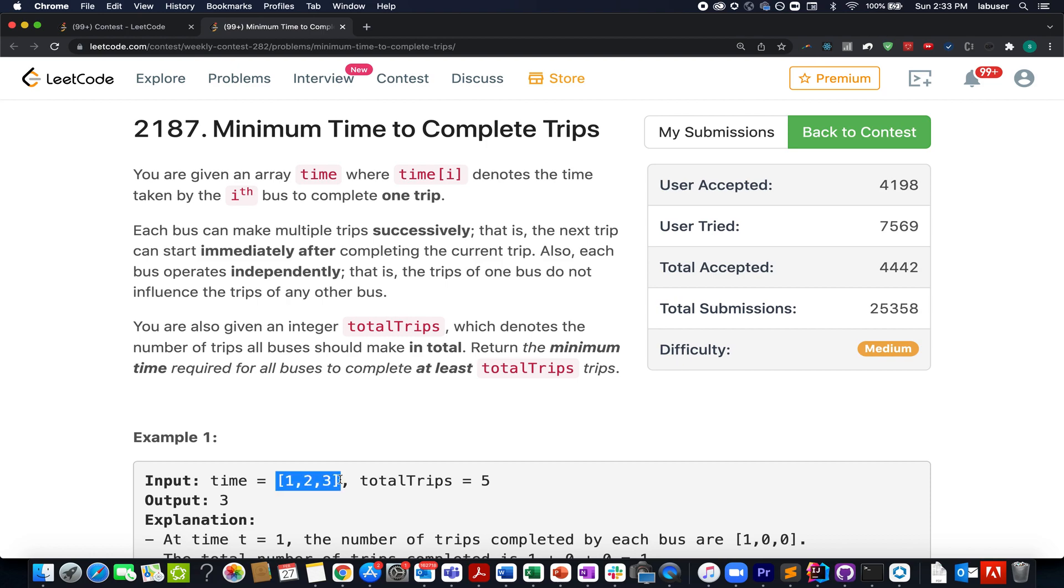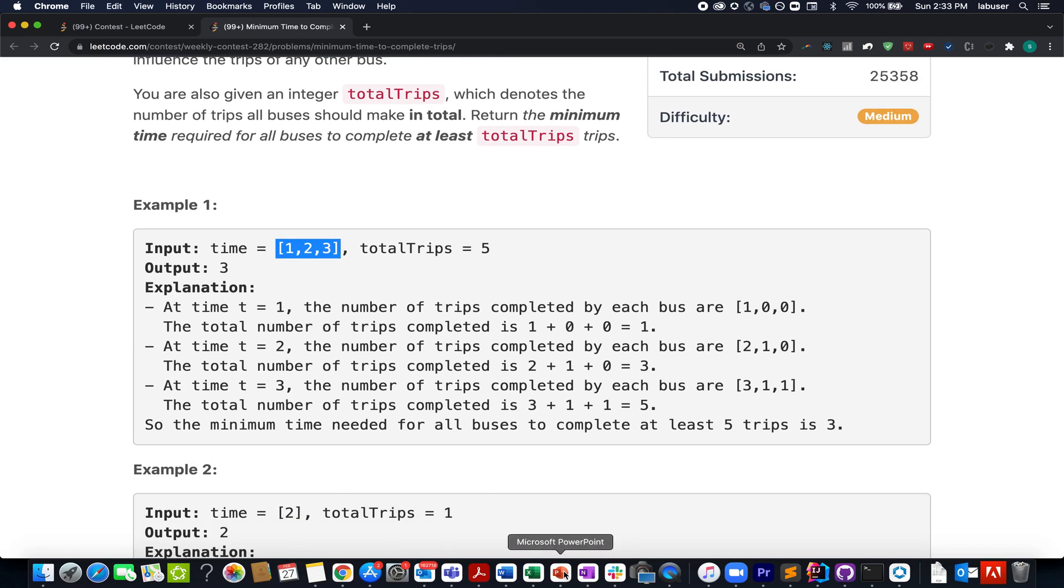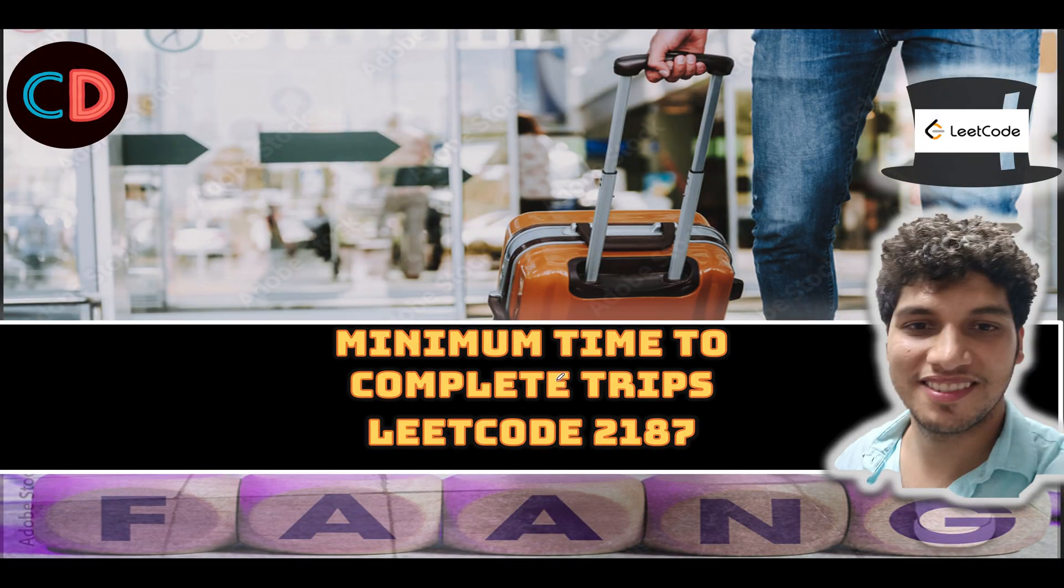Also it is specified that all these buses are operating parallelly in nature, and the trip of any particular bus is not dependent on the other one. I'll be walking you through this example as well as the algorithm to go about it by the presentation, so let's quickly hop on to it.